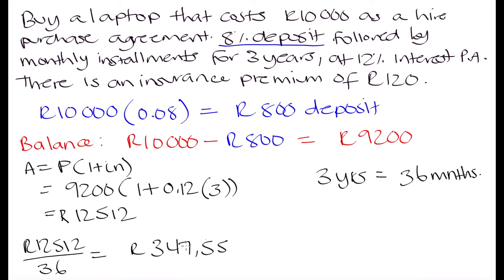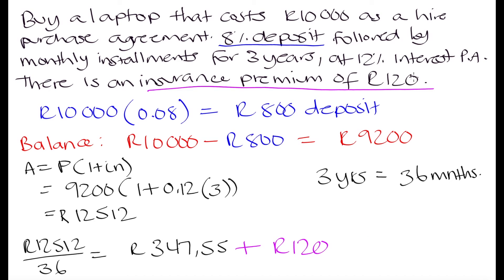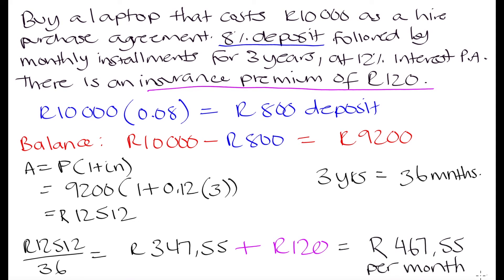But we also have the insurance premium of 120 Rand per month, which is an additional monthly cost. So the total monthly cost is 347.55 + 120 = 467.55 Rand per month. That is what we will have to pay each month for three years.